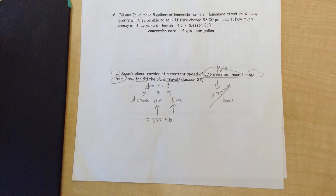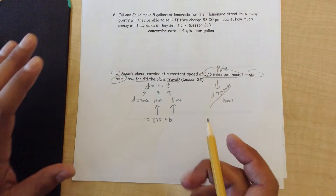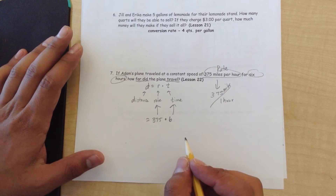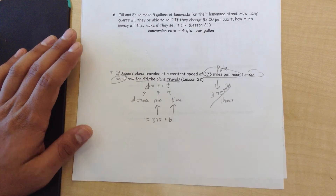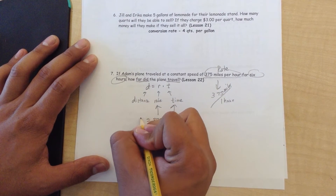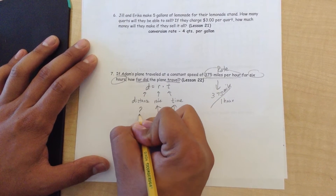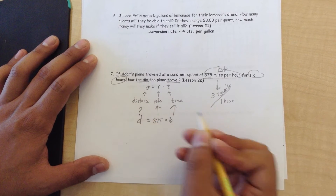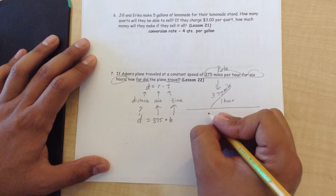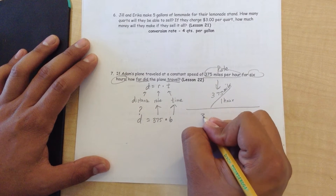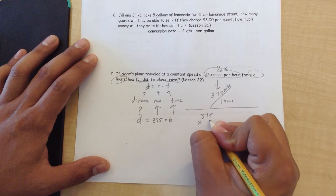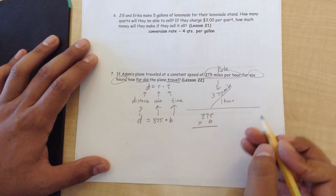It's not going to happen in just one single bound unless you're Superman. So distance is the unknown. Let's go ahead and multiply 375 times 6.